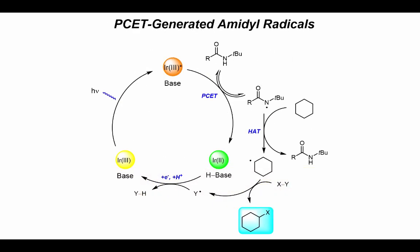Our first strategy towards accomplishing this goal was through a proton-coupled electron transfer strategy. We would have a base pulling on this amidyl N-H bond, so the amide could simultaneously be deprotonated and oxidized to give an amidyl radical. This amidyl radical could then engage in HAT to give a carbon-centered radical, which could be trapped by an external trapping agent. Unfortunately, low reactivity attributed to issues with back electron transfer after the initial PCET step and product inhibition after formation of the YH byproduct limited these efforts.